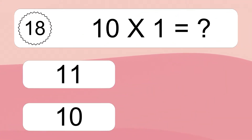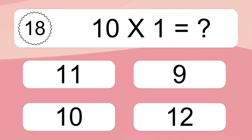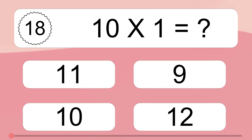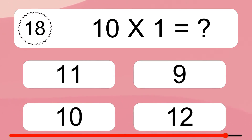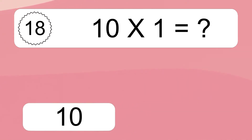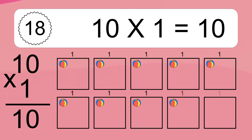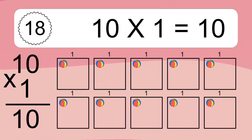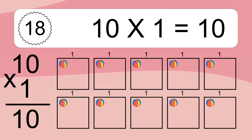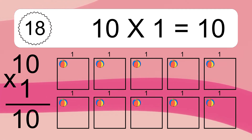10 times 1 equals what? 10 times 1 equals 10. We have 10 boxes, and each box has 1 colorful ball inside. If you count all the balls in all the boxes together, you will have 10 times 1 balls. This equals 10 balls.